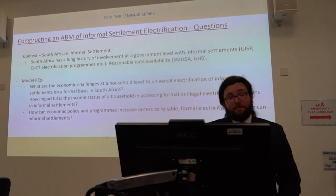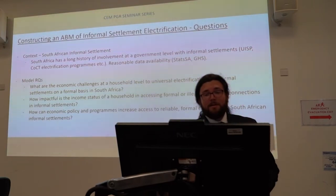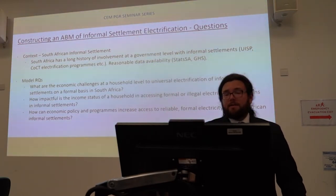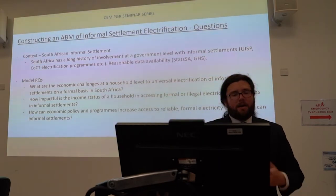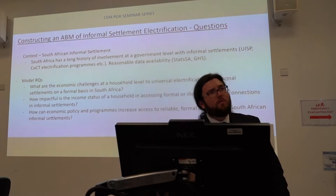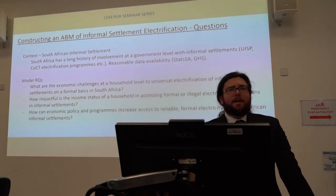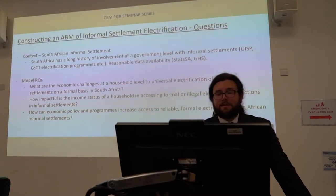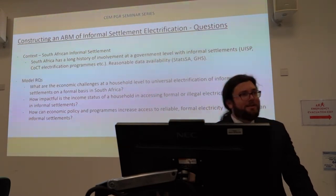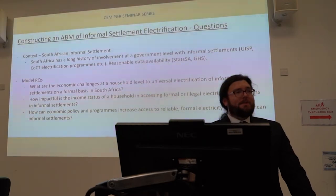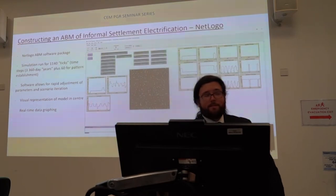For this model specifically, I set myself three research questions: the economic challenges at a household level to universal electrification of informal settlements on a formal basis in South Africa; the impact of income status of a household on accessing formal or illegal electricity connections; and what kind of economic policies or programs would increase access to reliable formal electricity. I emphasise 'reliable and formal' because we could define illegal electricity connections as electricity access — but we need to look at whether we mean access for access's sake, or on a formal legal basis. Illegal connections have challenges like fire risk and electrocution.